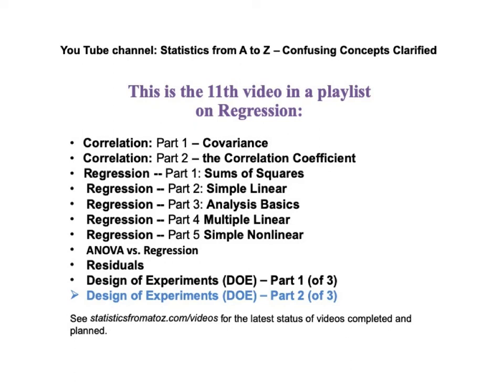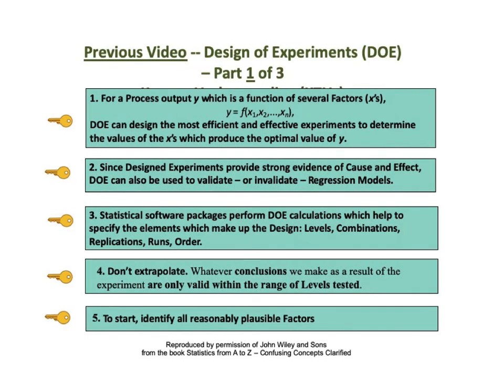DOE is the discipline used to validate regression models. Since this Part 2 video builds onto Part 1 video, let's review the keys to understanding from Part 1. Those keys summarize what we covered in that Part 1 video. The first key to understanding from Part 1 says, For process output y, which is a function of several factors, the x's, that is for y equal f of x1, x2, dot dot dot, xn, Design of Experiments, or DOE, can design the most efficient and effective experiments to determine the values of the x's, which produce the optimal value of y.